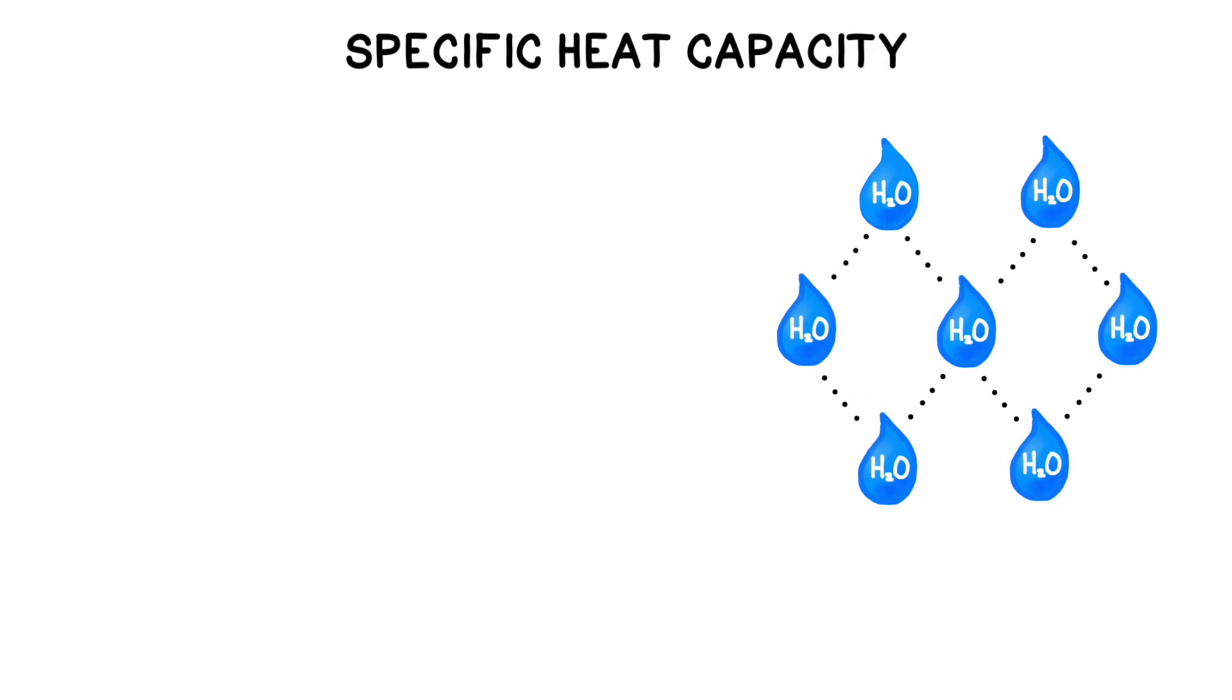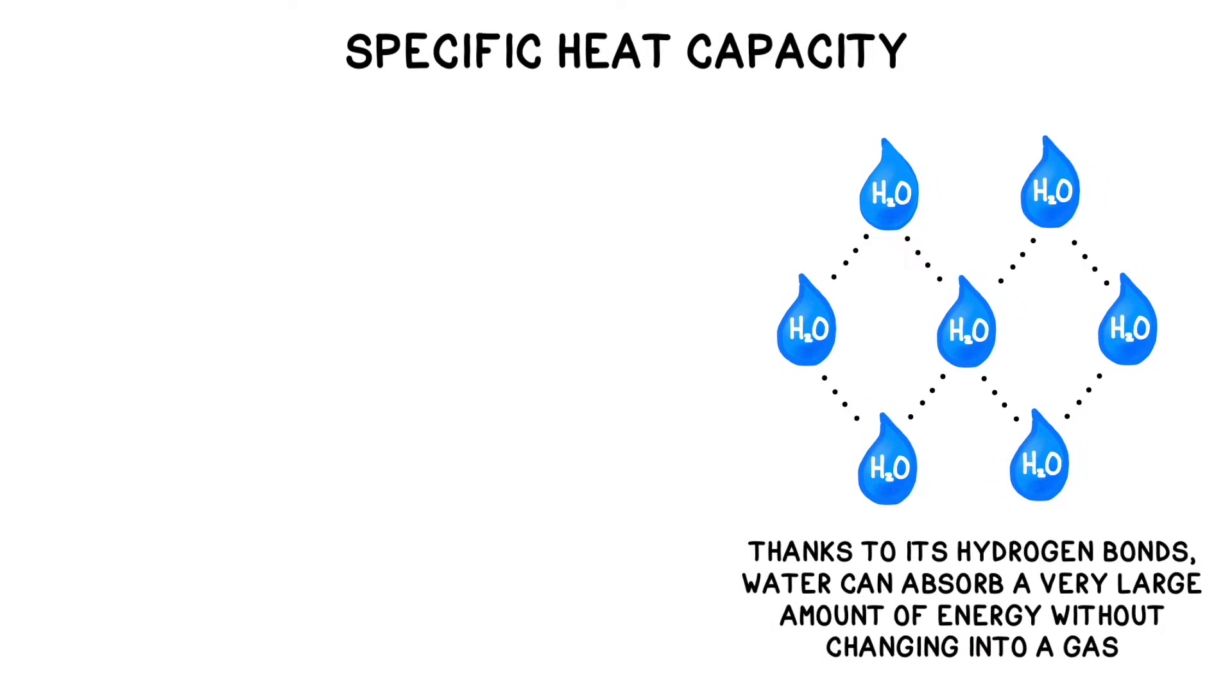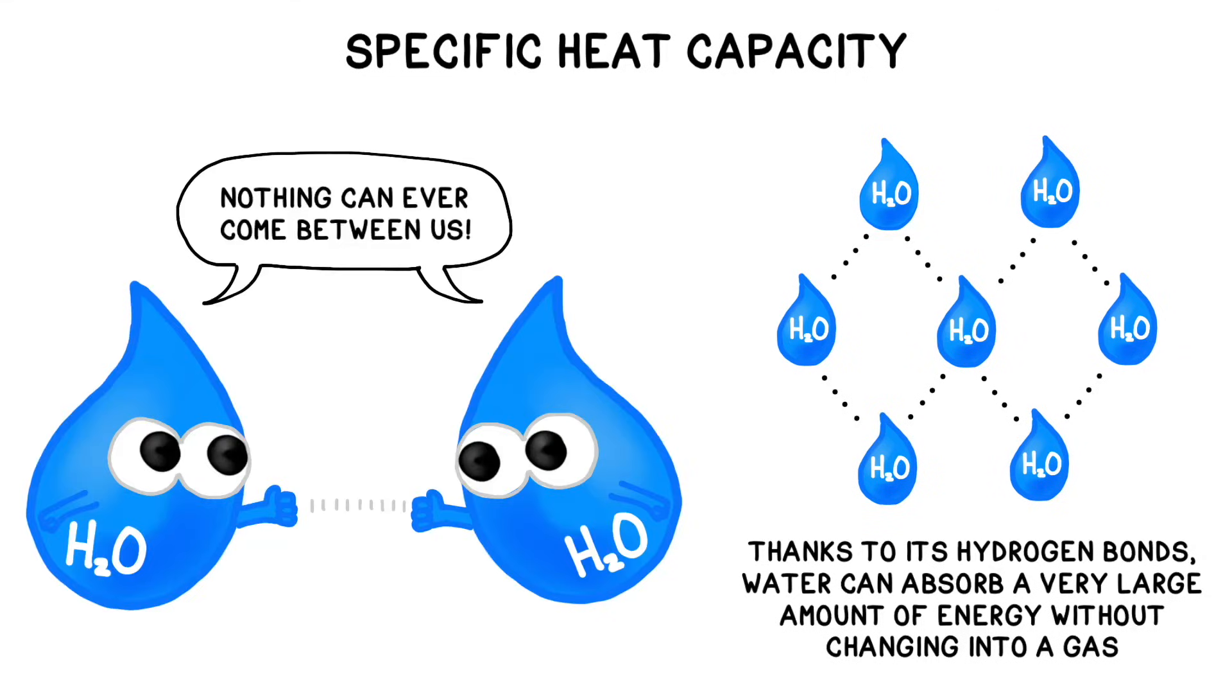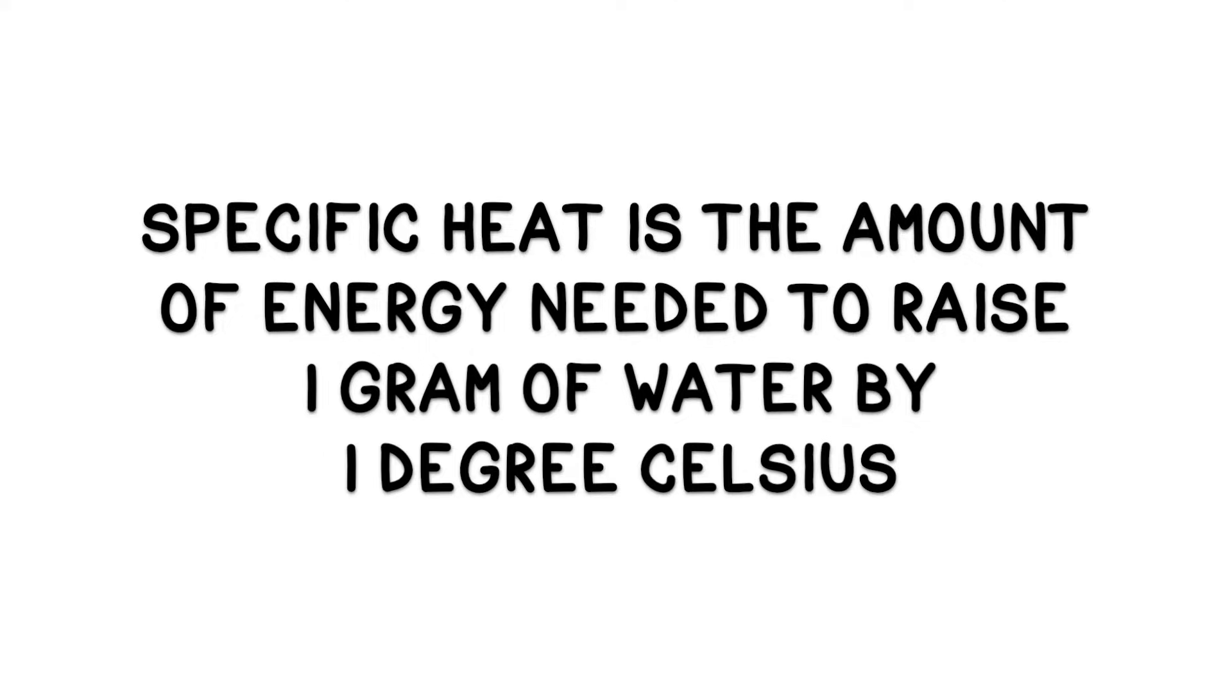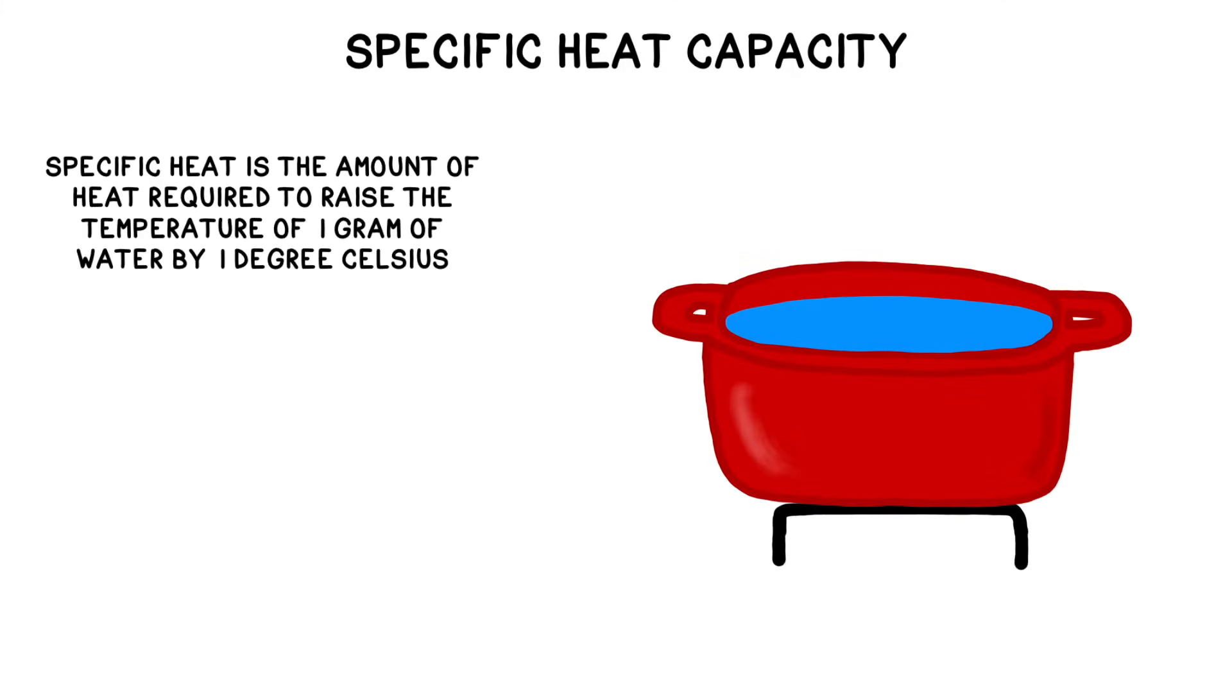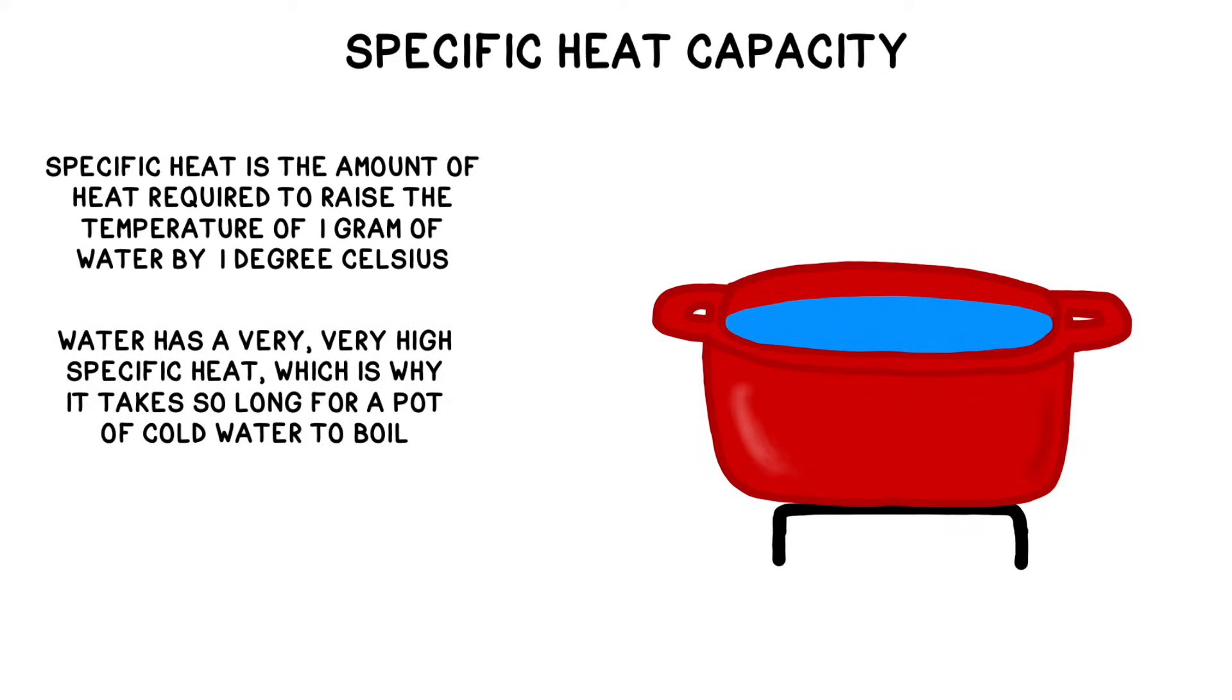Thanks to its hydrogen bonds, water can absorb a very large amount of heat energy without changing into a gas. Water has a high specific heat capacity, which means it needs a lot of heat in order to raise the temperature of one gram of water by one degree Celsius. This is why it takes ages and a lot of heat from the stove to get a pot of cold water to boil.